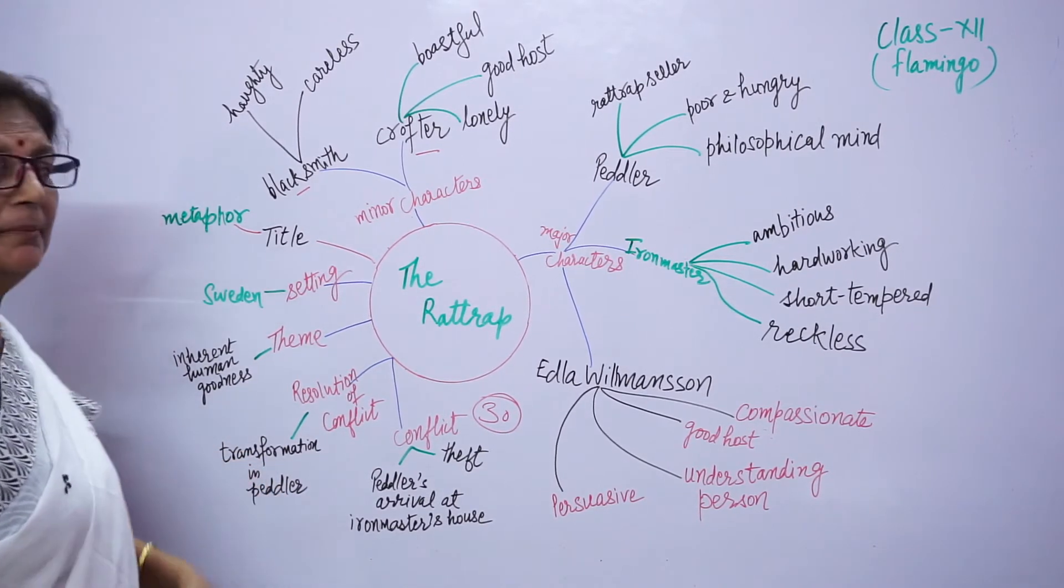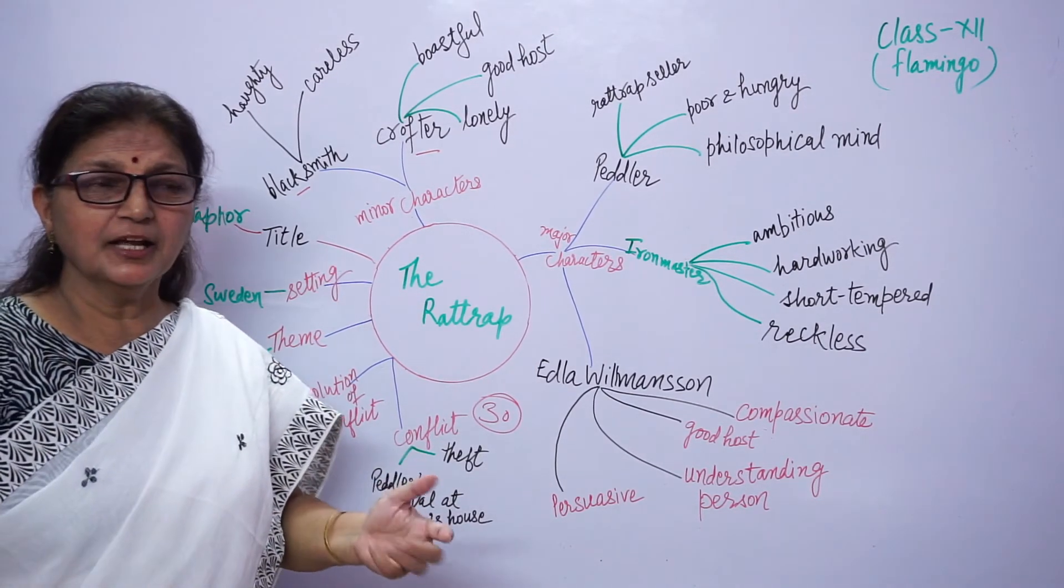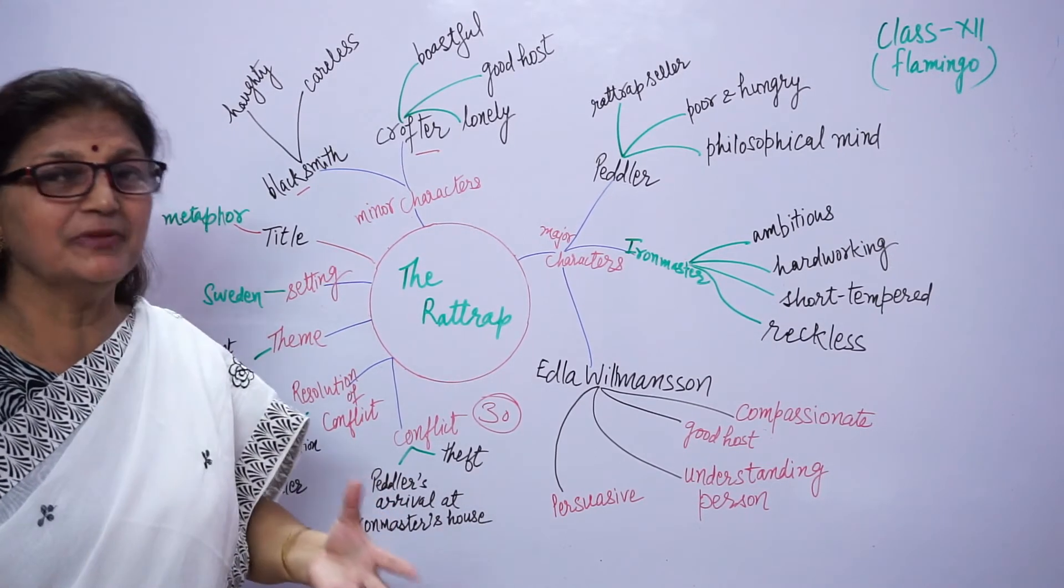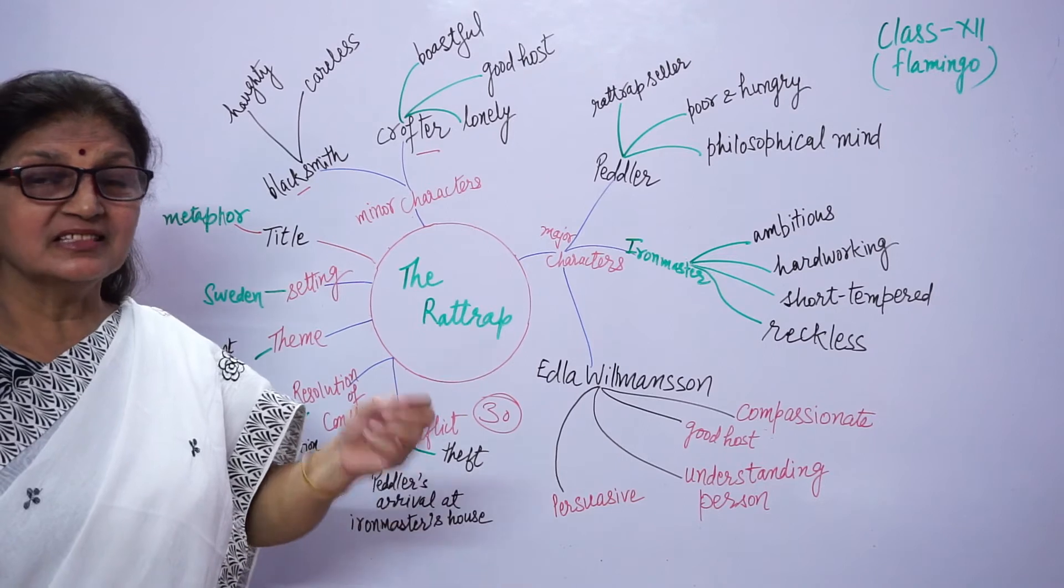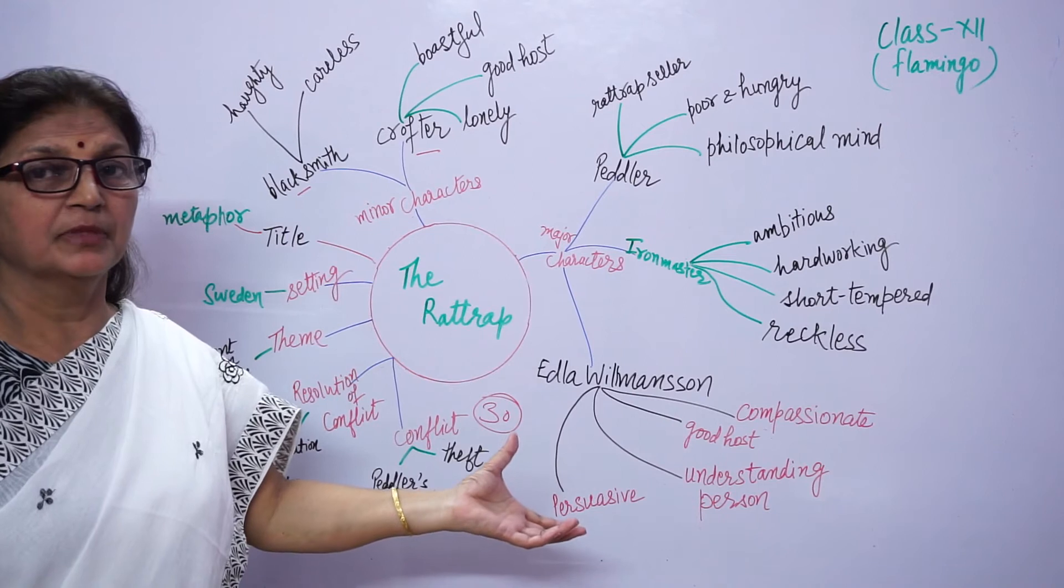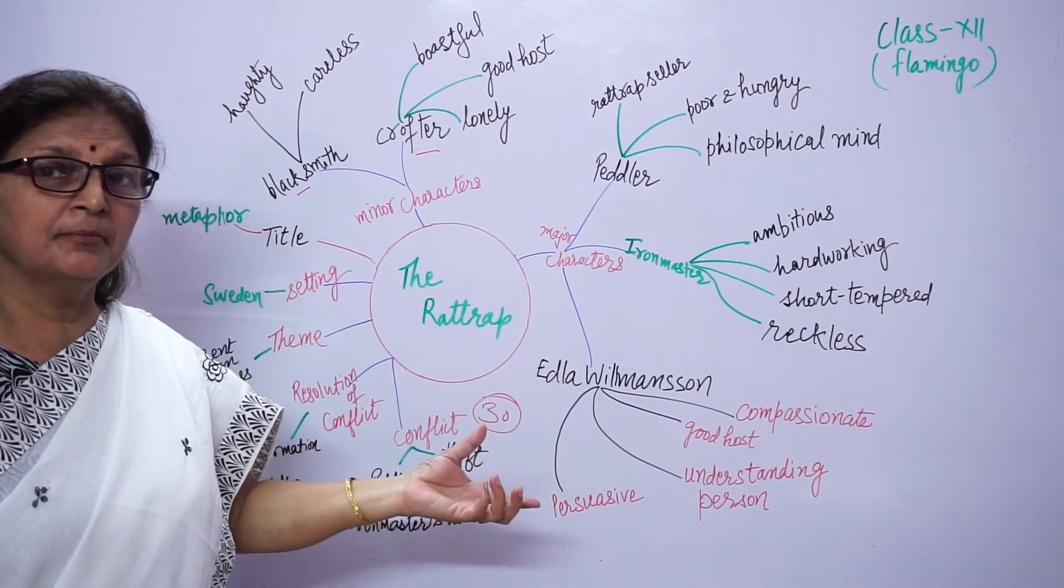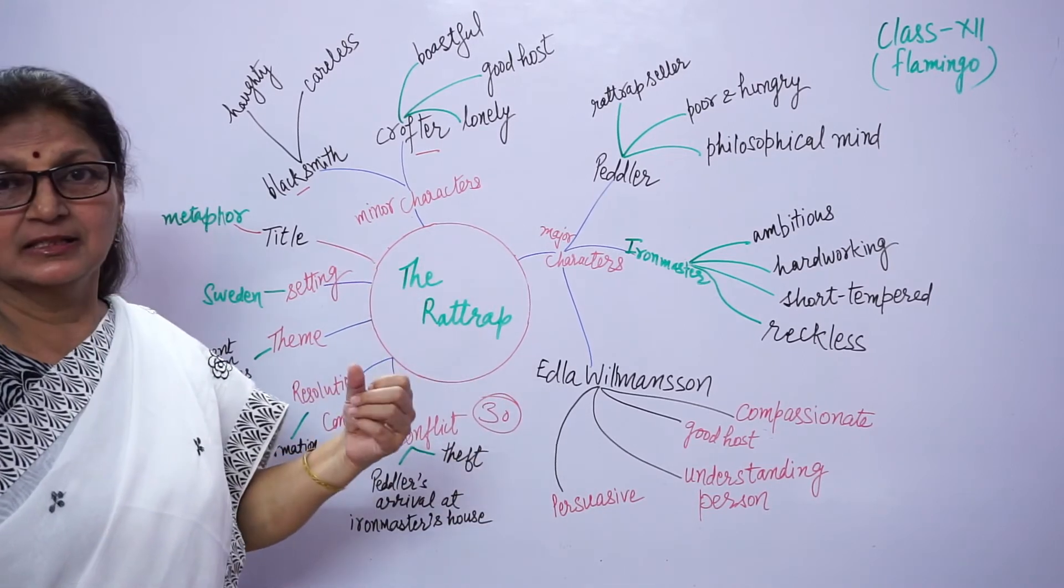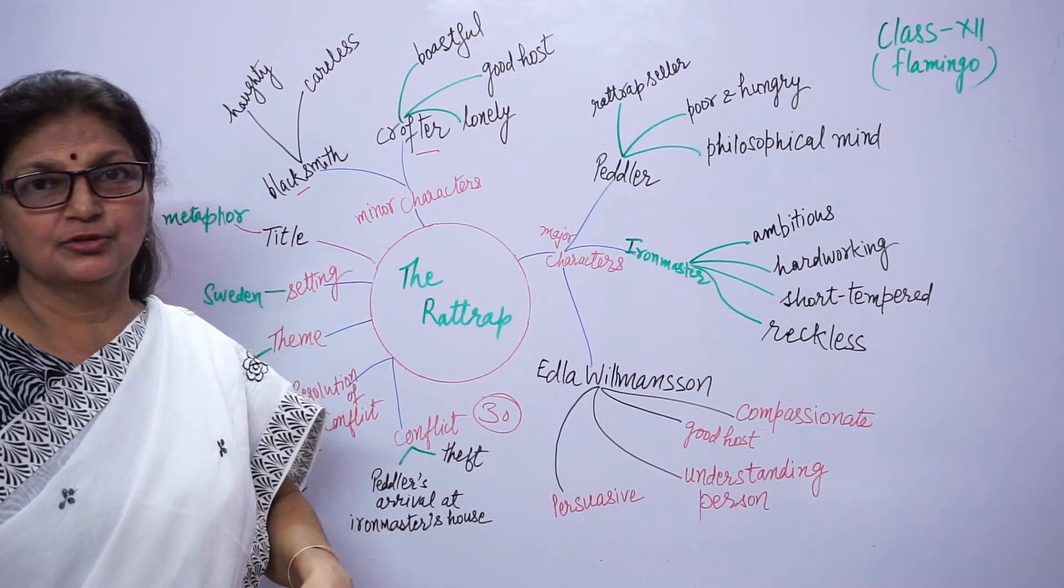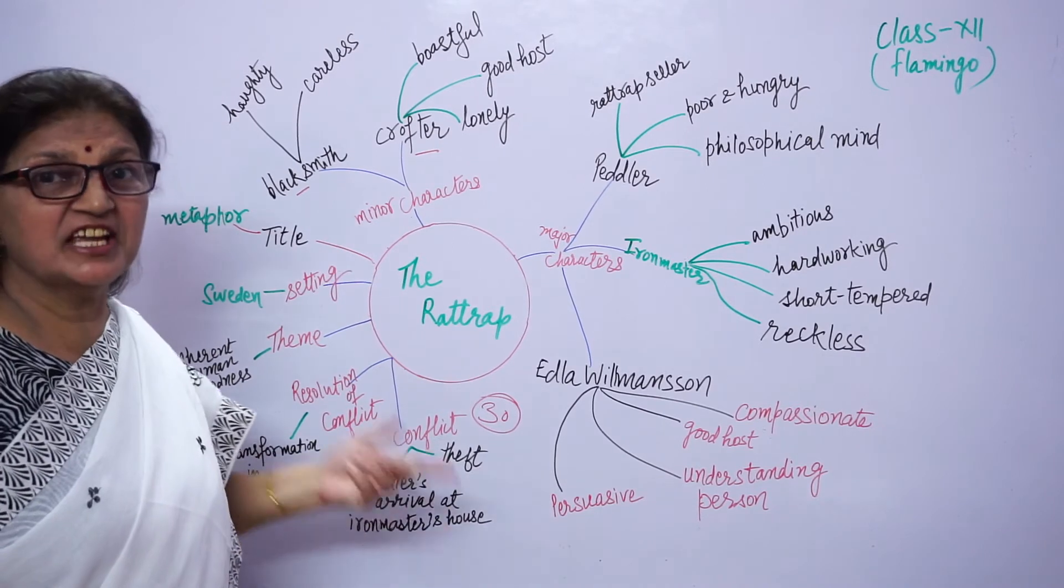The resolution of this conflict is transformation in peddler. This is a very important point. In the beginning we don't find peddler a good human being. He shows his weakness. He steals the money of the person who reposed faith in him, who gave him food, shelter, entertained him. He cheats that person, he deceived that person. But by the end of the story, peddler is transformed, peddler is a changed person.